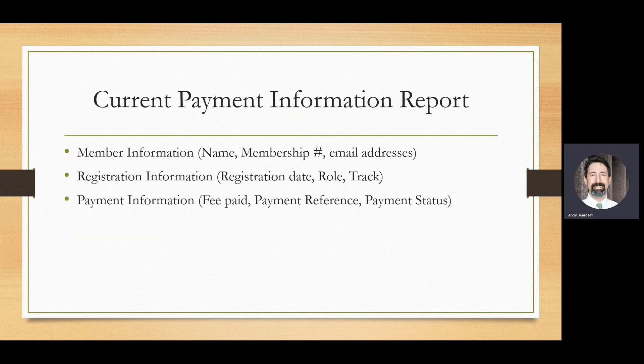The second report, the current payment information report, has much less information than the SAGE registrants report. Here you get the member information, the registration information, and the payment information.